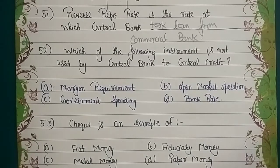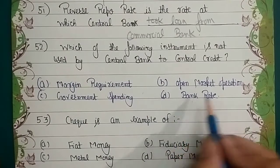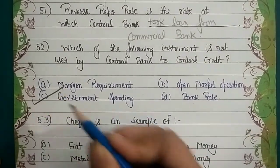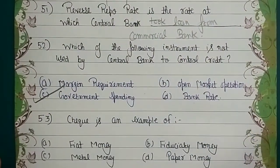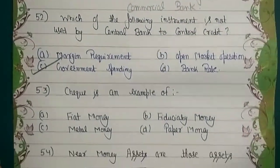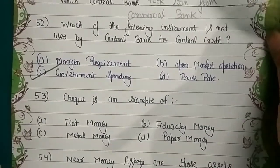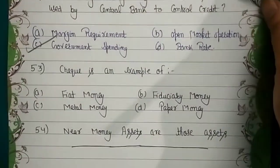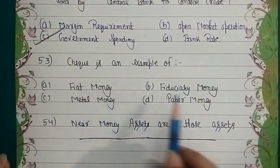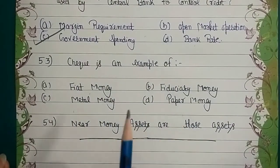From the list — margin requirement, open market operations, bank rate — all are instruments of the central bank. But government expenditure does not come under monetary policy or central bank instruments. Fiat money, fiduciary money, and paper money are types of money to be aware of.